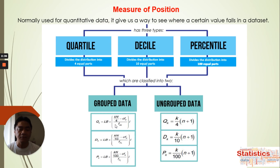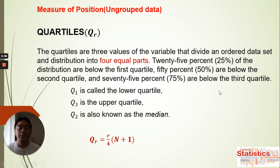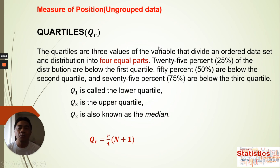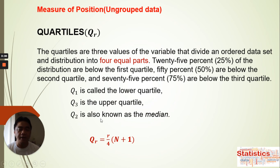For group data we have a separate formula. For ungroup data we start with quartiles. Quartiles are three values of the variable that divide an ordered data set and distribution into four equal parts — giving us Q1 at 25%, Q2 at 50%, and Q3 at 75%. The position formula is: Qr = (r/4) × (n + 1), where n is the number of data values.